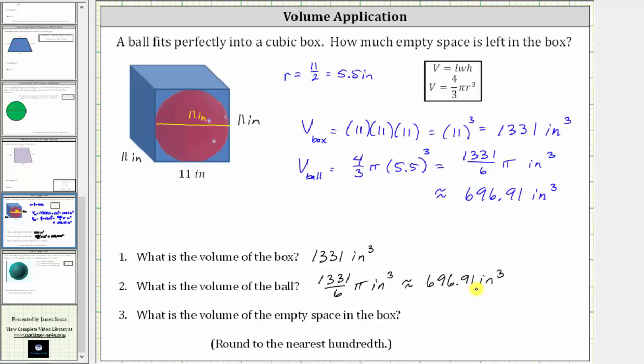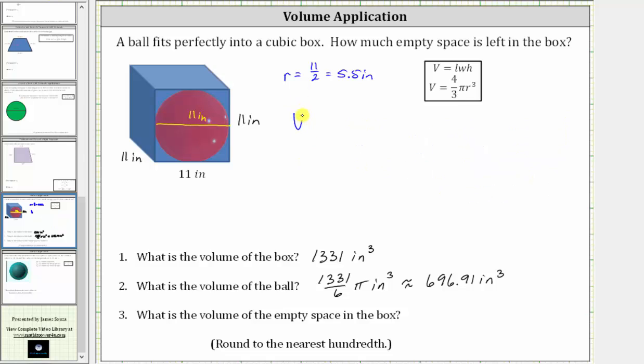And now for the last step, we will determine the volume of the empty space. To determine the volume of the empty space, we will take the volume of the cubic box and subtract the volume of the ball. So the volume of the empty space, we'll call it V-sub-empty, is equal to the volume of the box minus the volume of the ball.